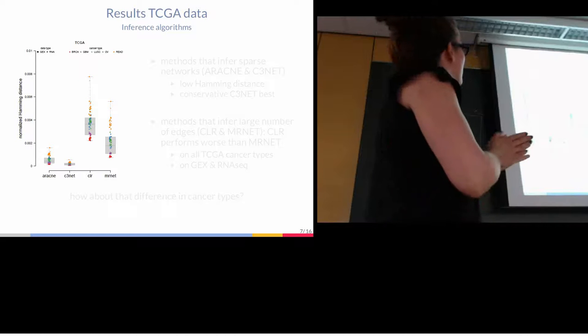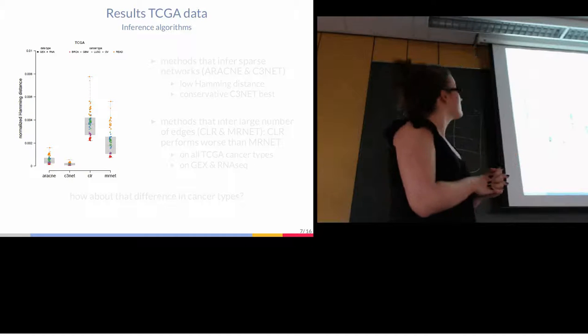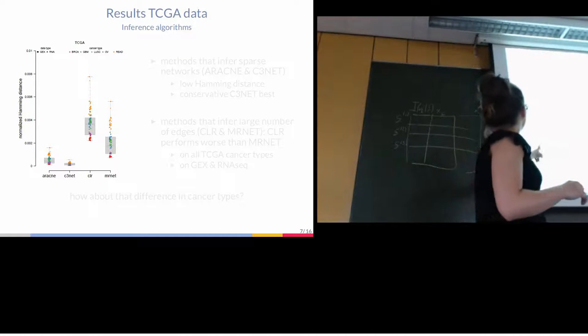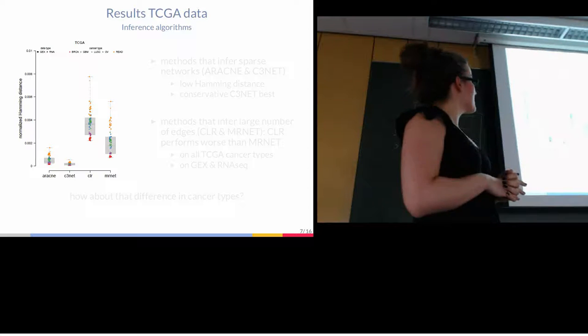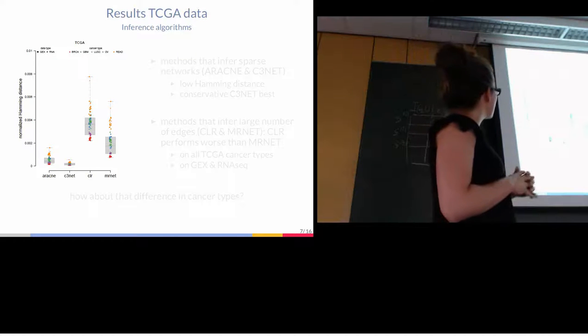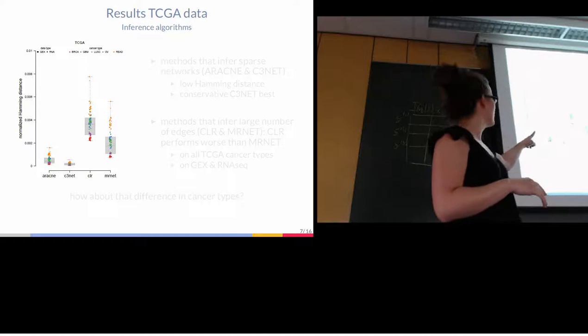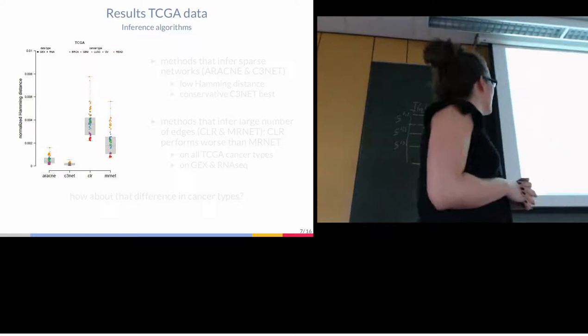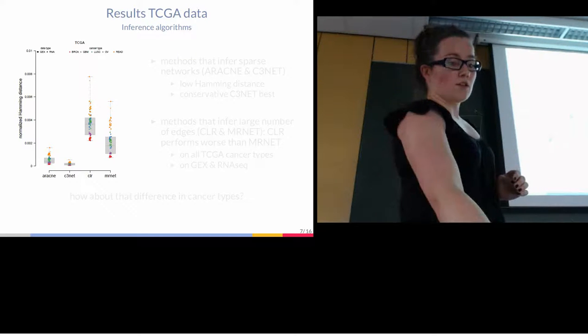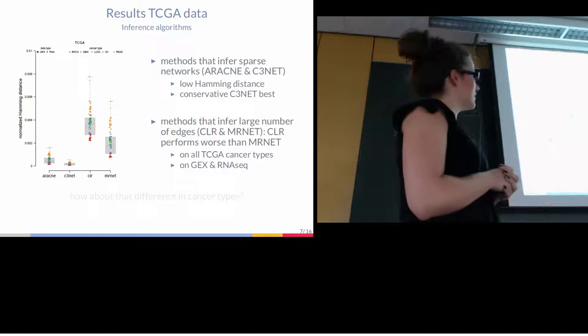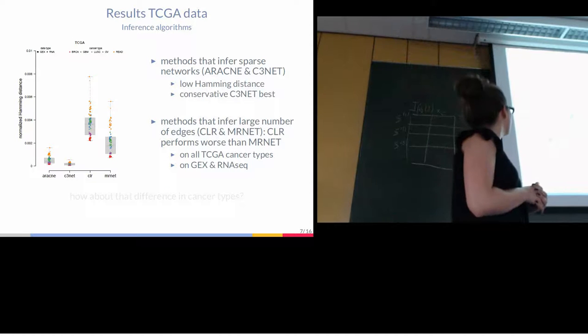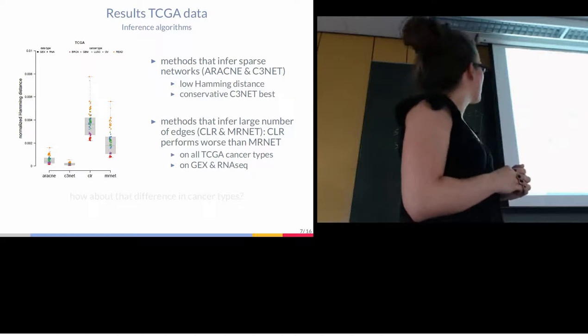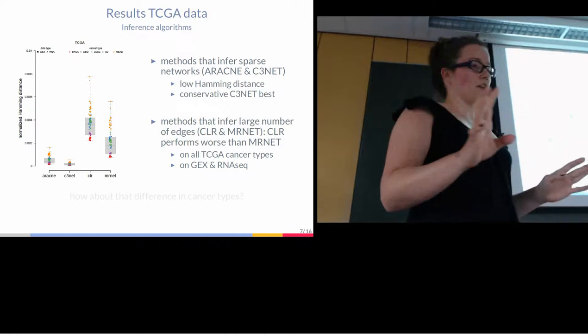So then we can look at the first set of results on TCGA data. On the x-axis you see the four network inference algorithms. On the y-axis you see the normalized Hamming distance. And in each box you can see by color the different cancer types. And then a bit smaller you can see RNA or GEX, which is not that relevant in this slide. So one thing you can notice directly is that the algorithms that infer sparser networks have lower Hamming distance. And on the larger ones, MRNET has lower Hamming distance than CLR.